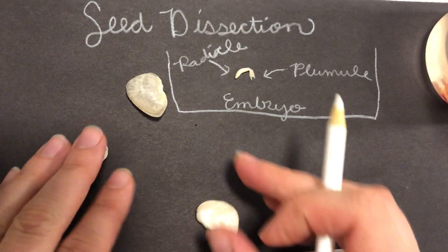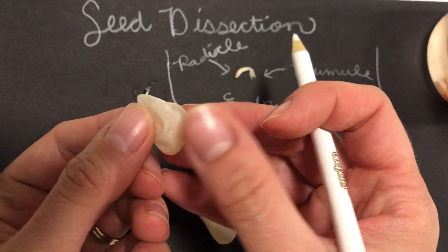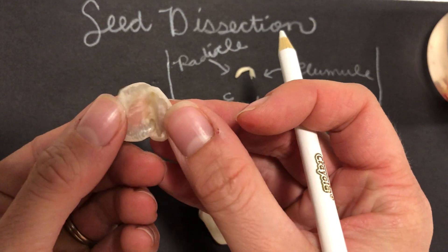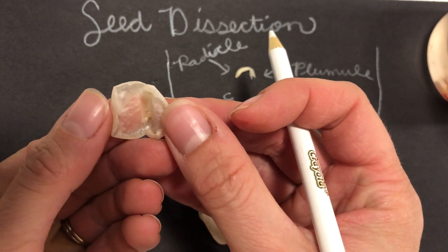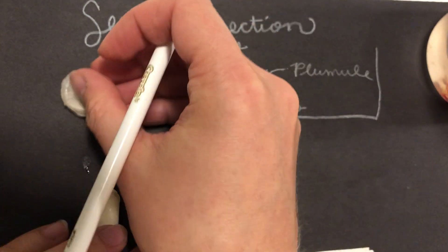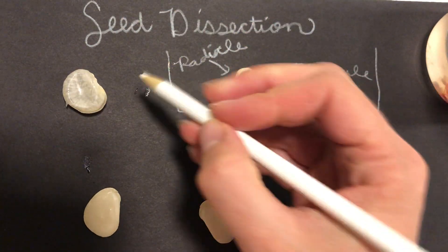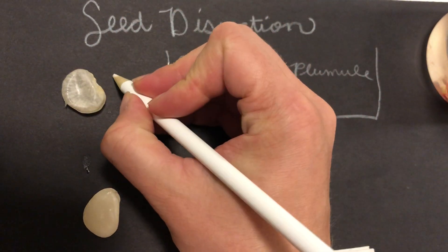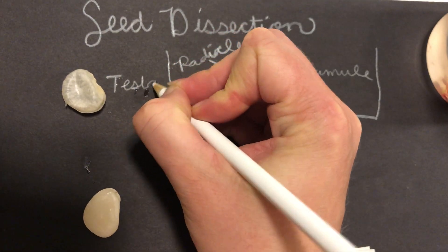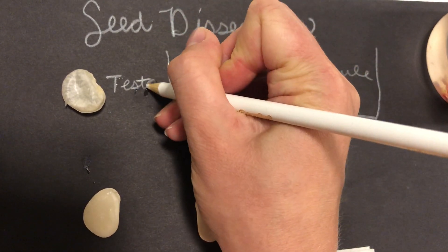Right here we have the testa. The testa is the covering of the seed, which protects it. Testa comes from the Latin word 'testa', meaning shell.